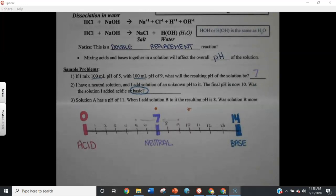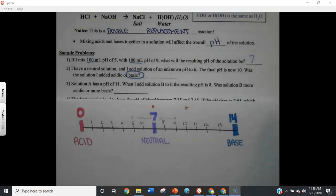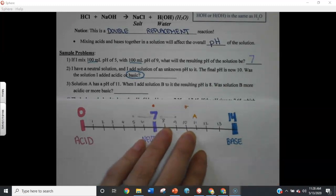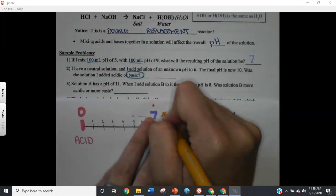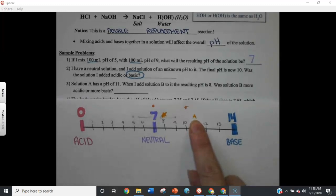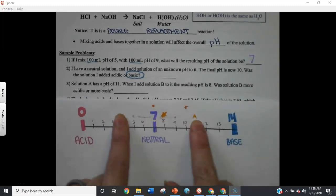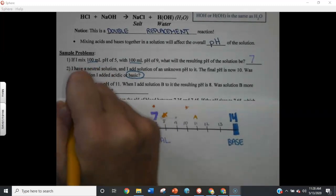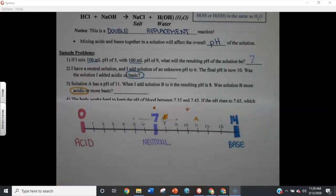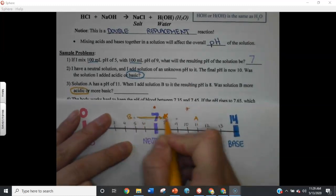Some of you, this feels very obvious. You can probably go through quickly. Some of you, this seems a little more strange. Hopefully we'll get it by the end of these practice. Solution A has a pH of 11. So, I'm going to put an A right here. Solution A has a pH of 11. When I add solution B to it, the resulting solution is pH 8. So, I'm just going to put a star here. Was solution B more acidic or more basic? Well, if I went here, and now I'm here, then I must have mixed something there. So, they meet in the middle. So, if solution A was basic, now I'm more neutral, that's because I added something acidic to it. I must have added a 4 or a 5 acid to it. B must have been right here. That's why they met in the middle.